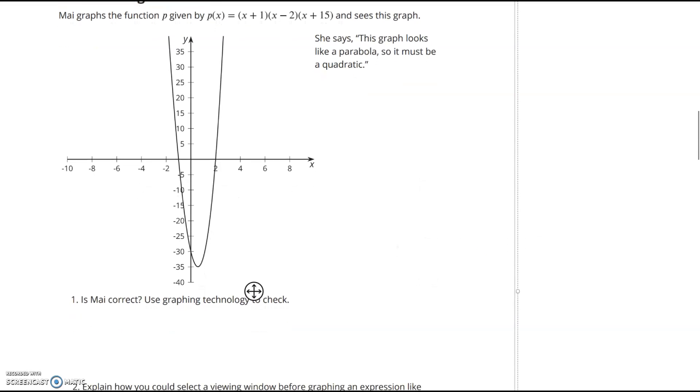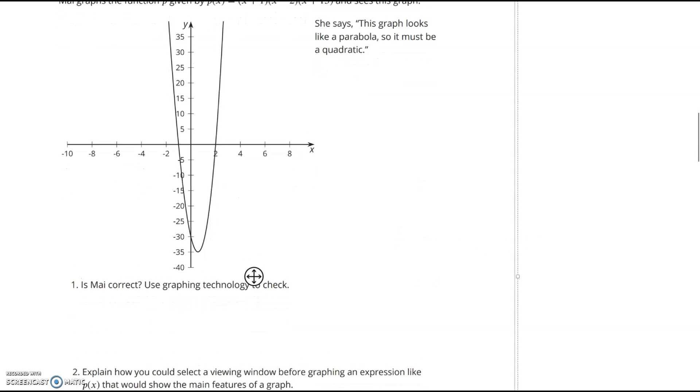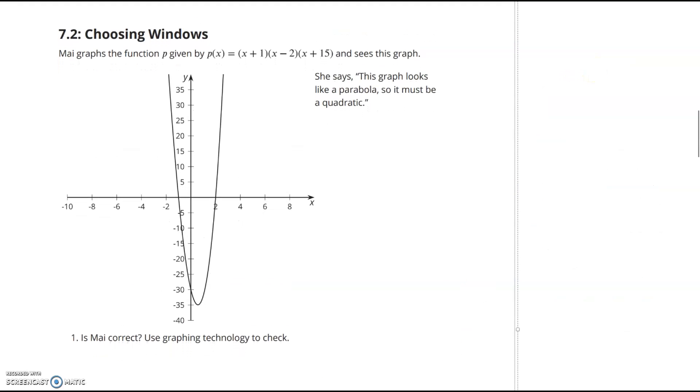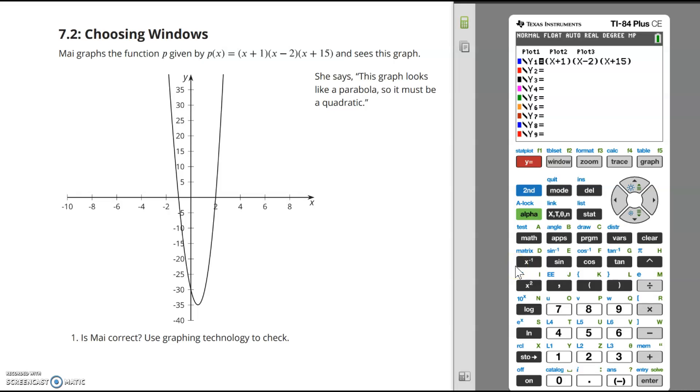Part 1 here: is May correct? Use graphing technology to check. So I would say if we pull up our graphing calculator, and here's our function entered in just as it's written. And then we hit graph.